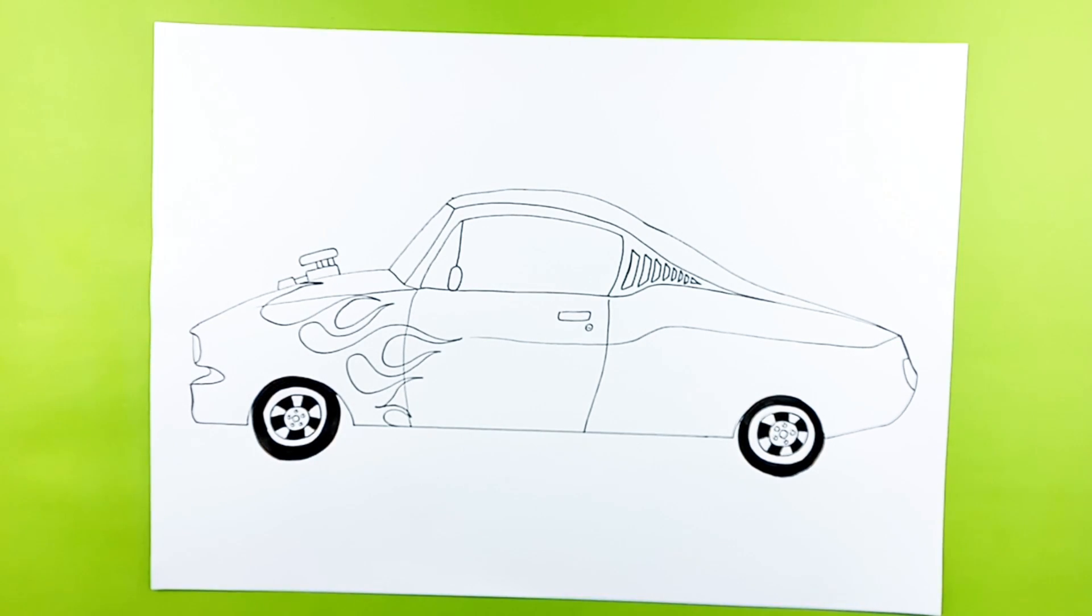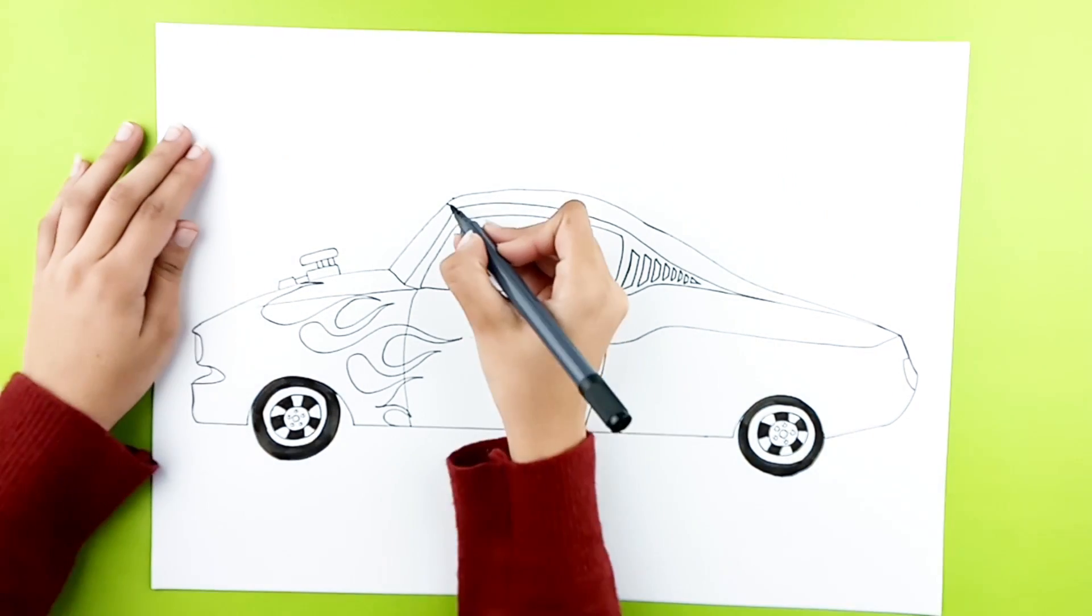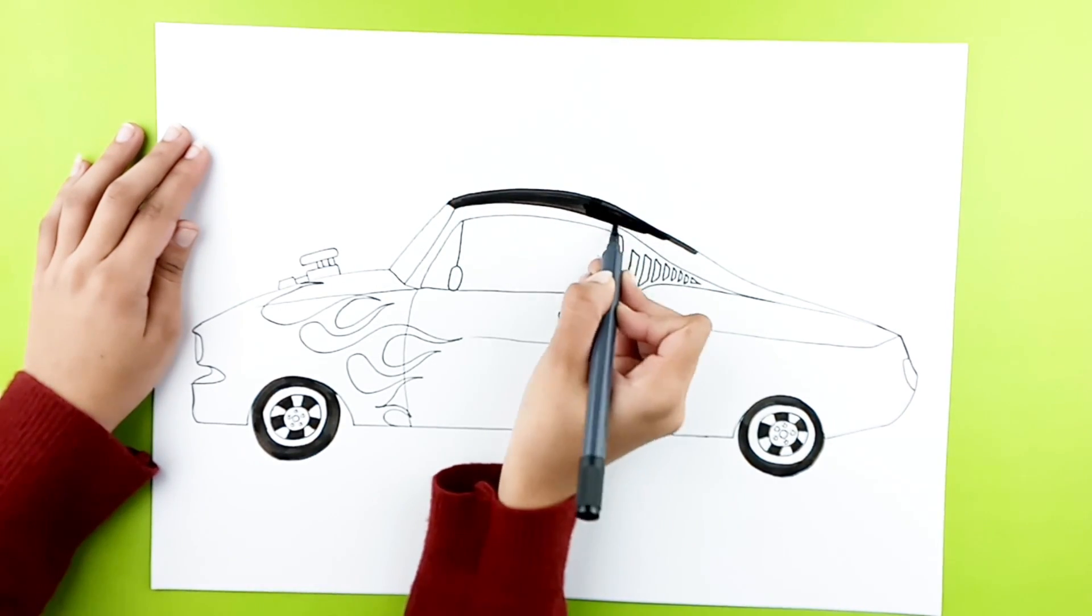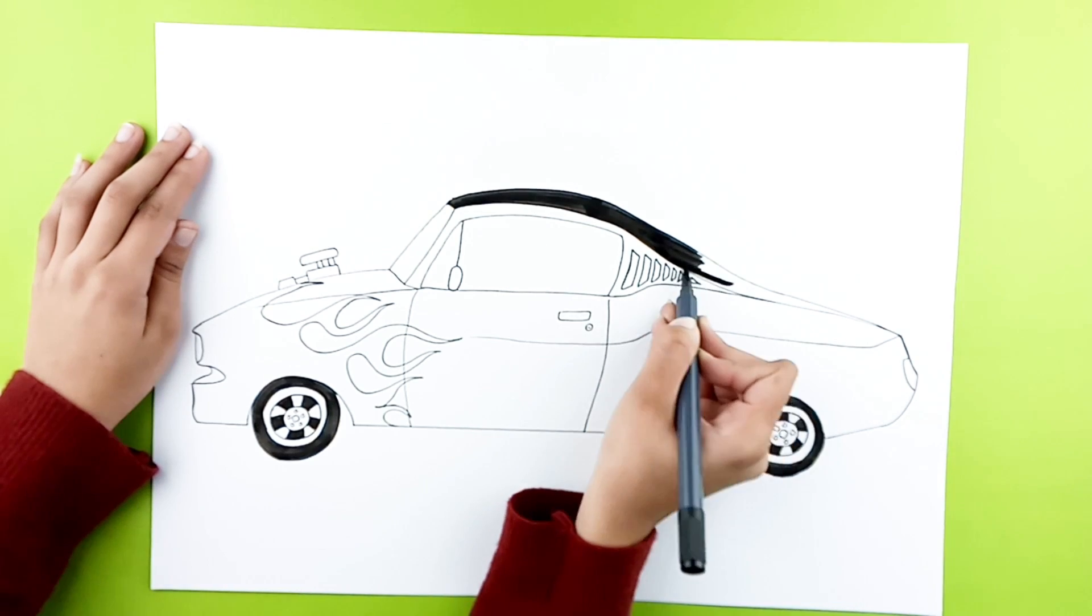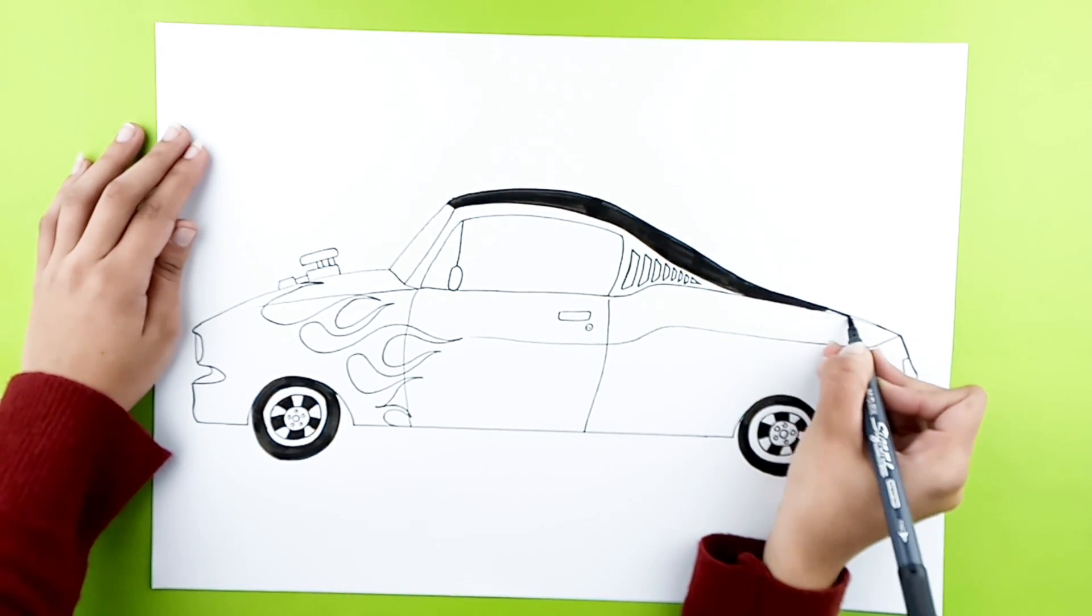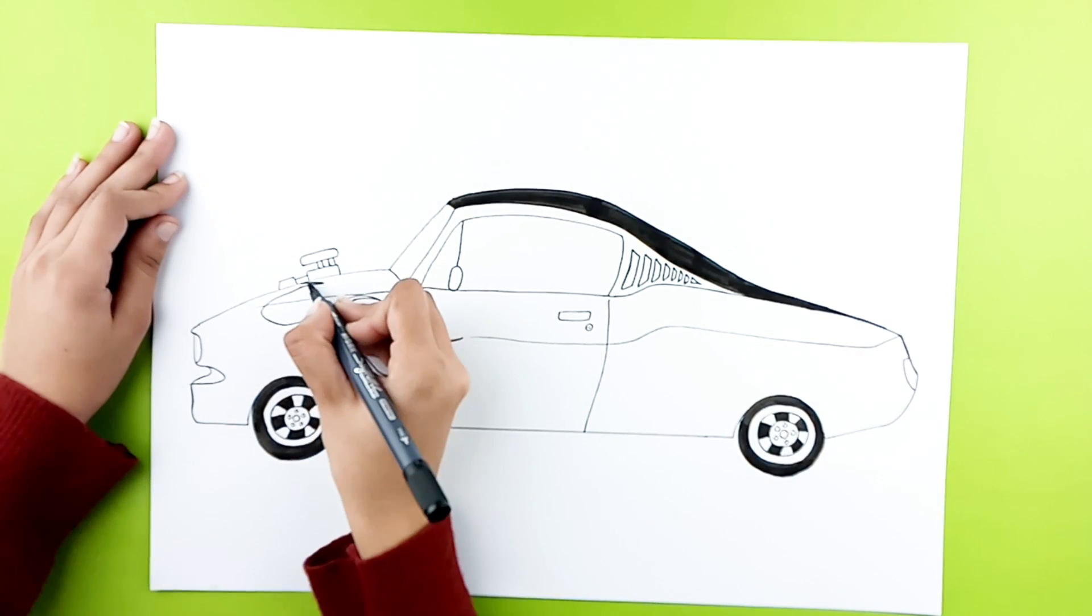Same color for the roof. Make sure you stay in the lines. And black for the bonnet.